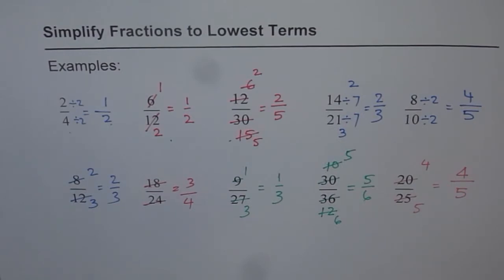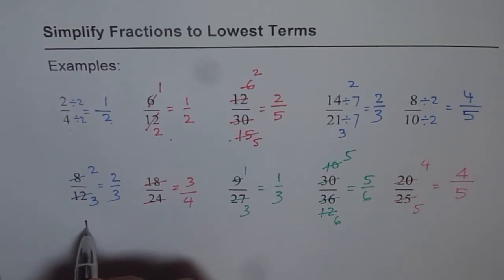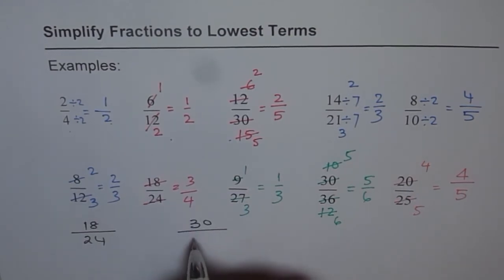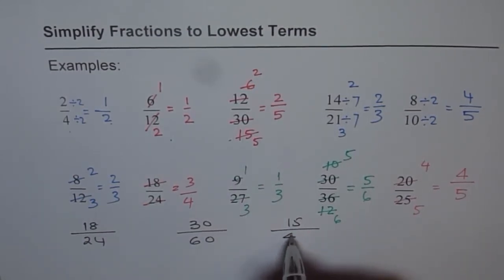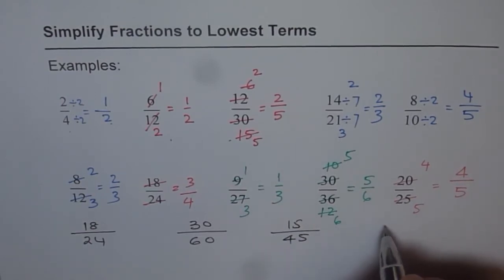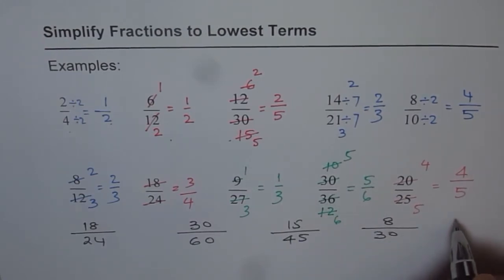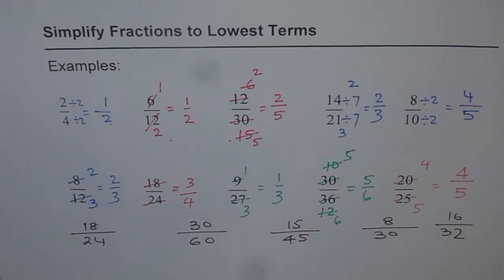I hope you understand it. Now what you can do is, you can try some on your own. So here are a few for you. Let's say we write a fraction 18 divided by 24. And then we can write 30 divided by 60. And then some more, 15 over 45. And then let me give you one as 8 divided by 30. And how about 16 divided by 32. Simplify them and check your answers.